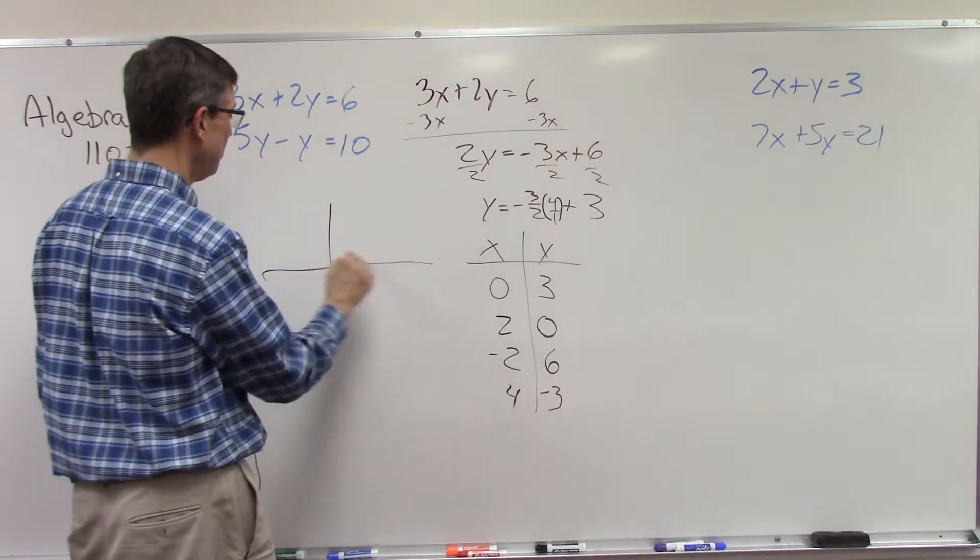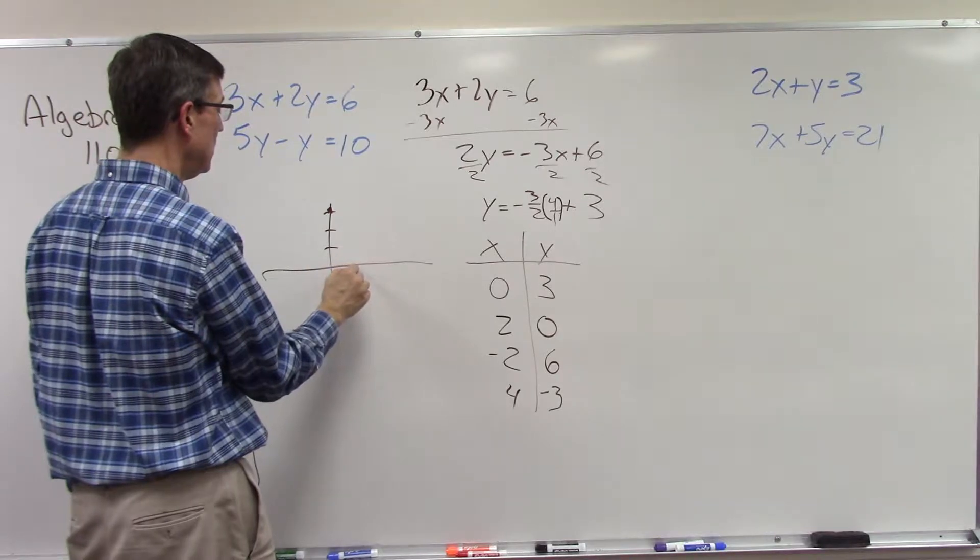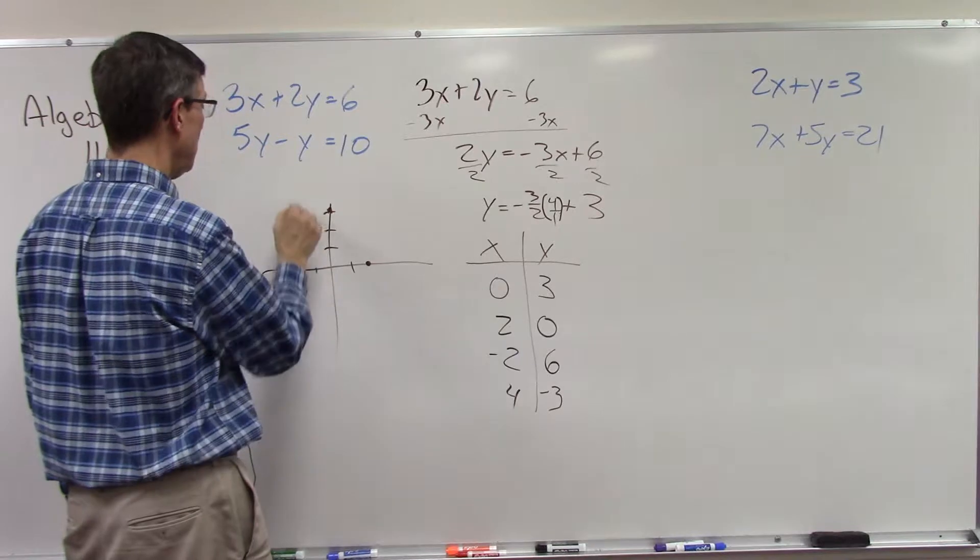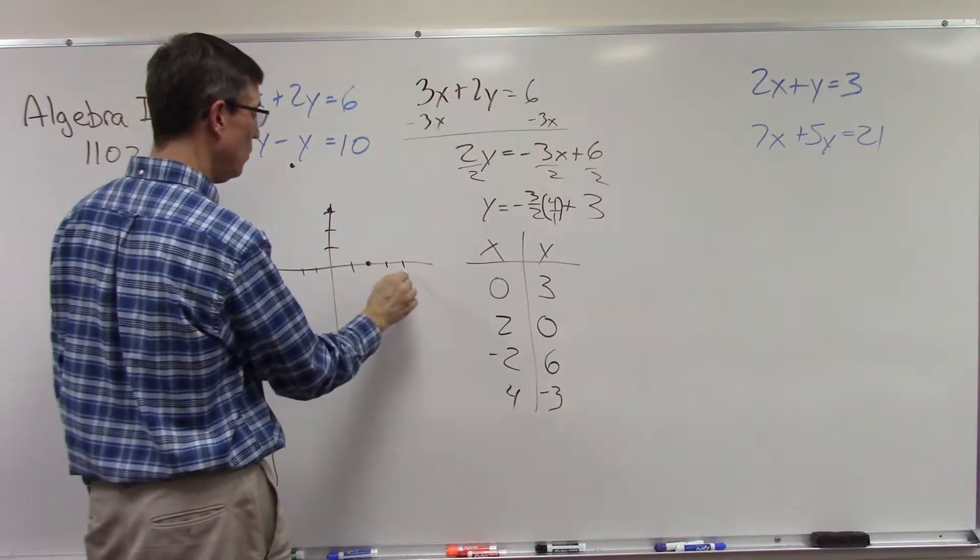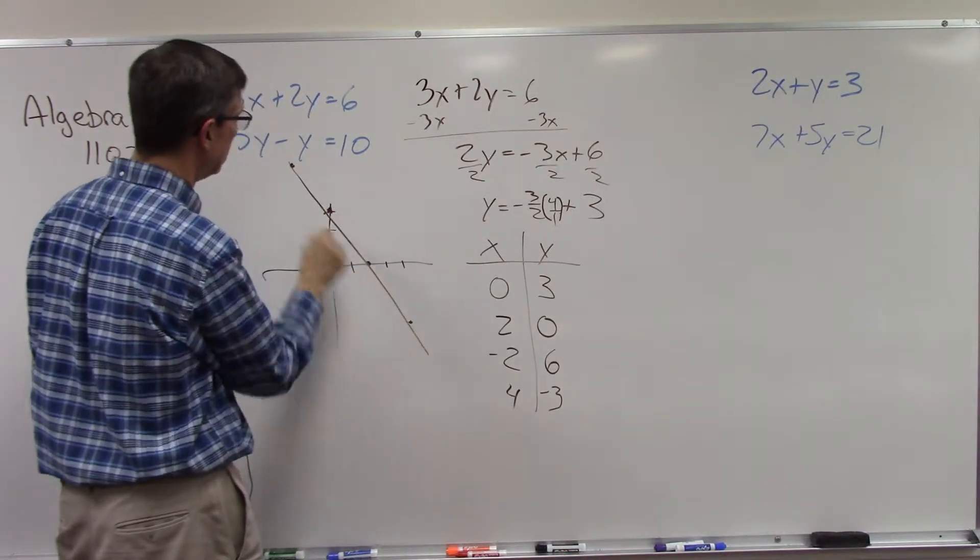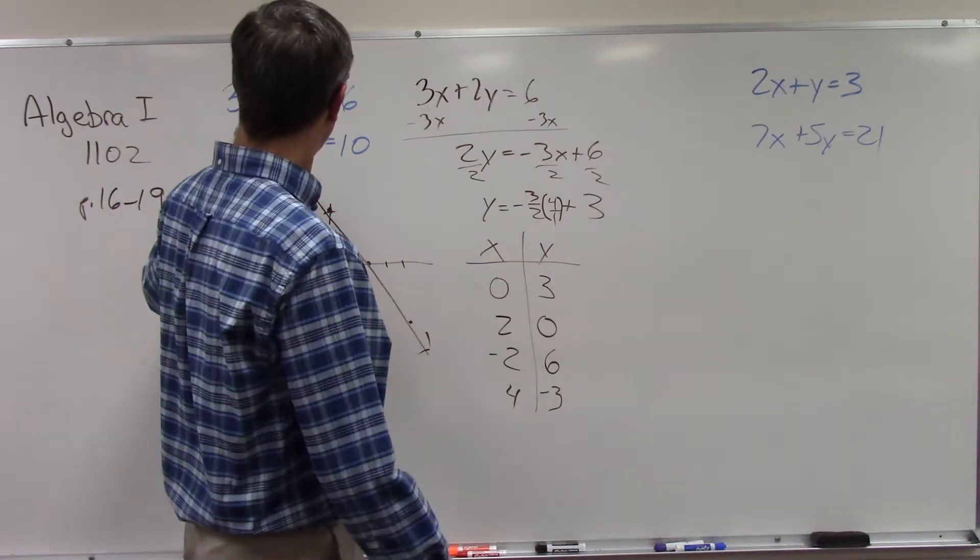Now you can see that if I were to graph these points over here on the graph, I'm just going to do it real fast. At 0, 3. At negative 2, I'm way up here at 6. And then at positive 4, I'm down here at negative 3. So I have a line that kind of looks something like that.